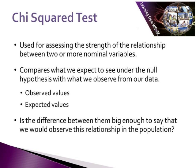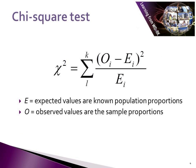The chi-square test of independence assesses the strength of the relationship between two or more nominal variables. It compares what we expect to see under the null hypothesis with what we observe from our data. So we are dealing with our observed values and our expected values, and we are looking at whether the difference between them is enough to say that we would observe this relationship in the population. We are back to our familiar chi-square test statistic, dealing with our expected and observed values.